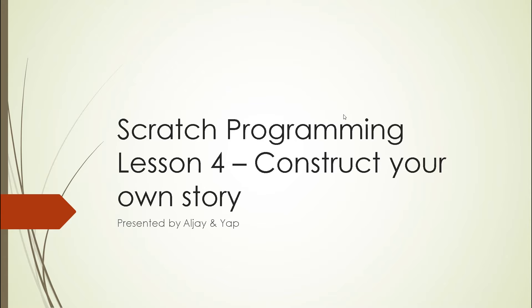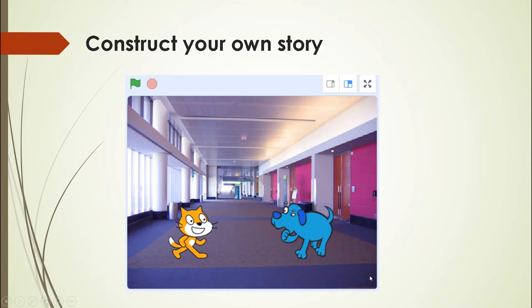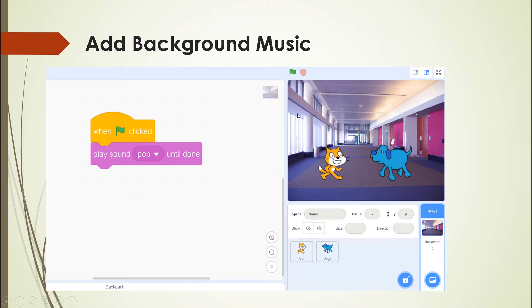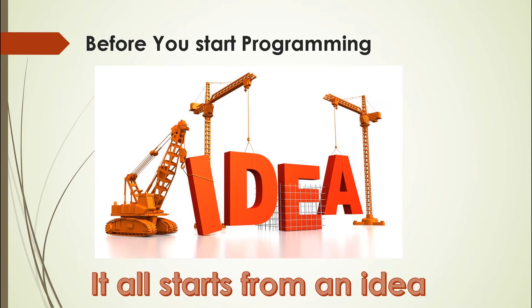Hi guys, it's lesson 4. Last lesson we covered how to add the backdrop and how to make the cat move into the screen, then make all the characters move up from the screen at the last scene. In lesson 3 we combined motion and animation to make it more lively, and we also covered how to add background music.